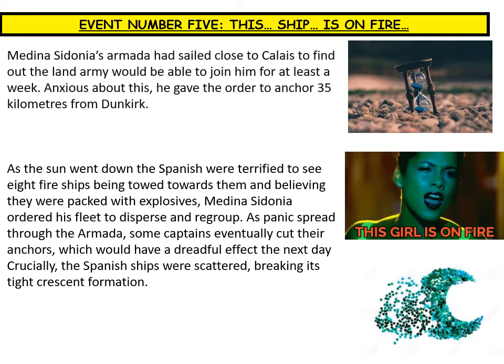Event five: fire ships. Medina Sidonia's Armada had sailed close to Calais to find that the Duke of Parma's land army would not be able to join him for at least another week. Anxious, he gave the order to anchor 35 kilometres from Dunkirk. As the sun went down, the Spanish were terrified to see eight fire ships being towed towards them. Believing they were packed with explosives, Medina Sidonia ordered his fleet to disperse and regroup. As panic spread, some captains cut their anchors — with dreadful consequences the next day. Crucially, the Spanish ships scattered, breaking the tight crescent formation, an innovative tactic that would prove crucial at the Battle of Gravelines.